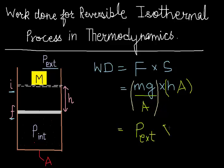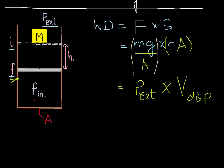The second quantity is h into A, area of cross section. This is nothing but the volume which is displaced by the piston as it sinks down from position I to position F. So we can say that the work done is given by P_ext into V displaced, the volume displaced.